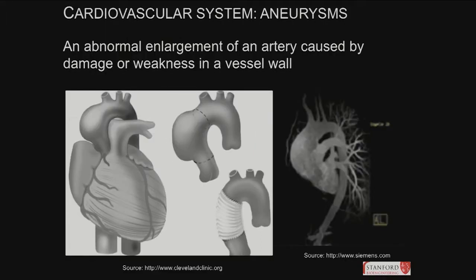Aneurysms are abnormal enlargements in arteries caused by damage or weakness — mostly hypertension-related or atherosclerosis-related. They're risky because they can burst, causing death fairly quickly, or dissect into other arteries affecting end organs and causing strokes. When not too large they can be managed medically, but when they exceed a certain size — monitored yearly — they require surgical treatment or endovascular grafts.